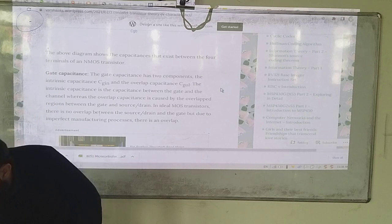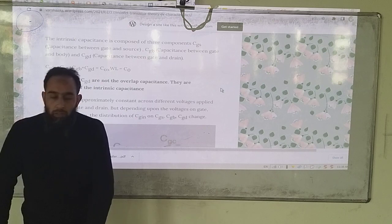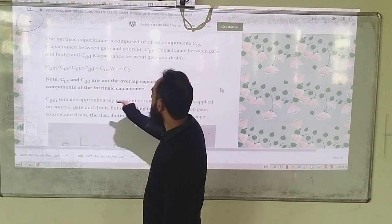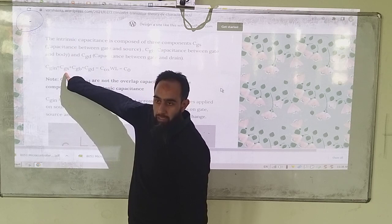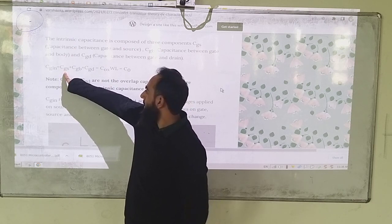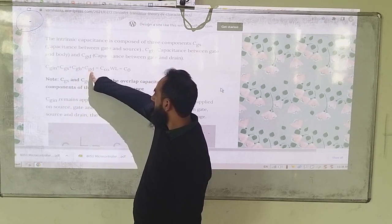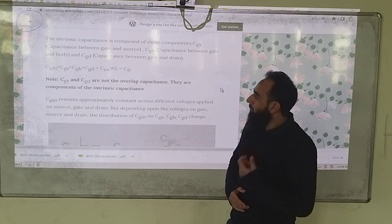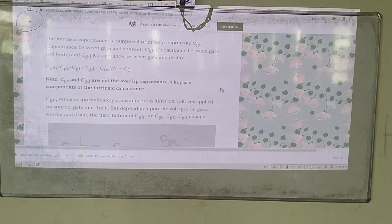Where the drain and the source overlap, the intrinsic capacitance is given as: Cgin is equal to CGS, you know what CGS is, plus CGb gate to body, plus CGd gate to drain. So the intrinsic capacitance is the sum total of these three.